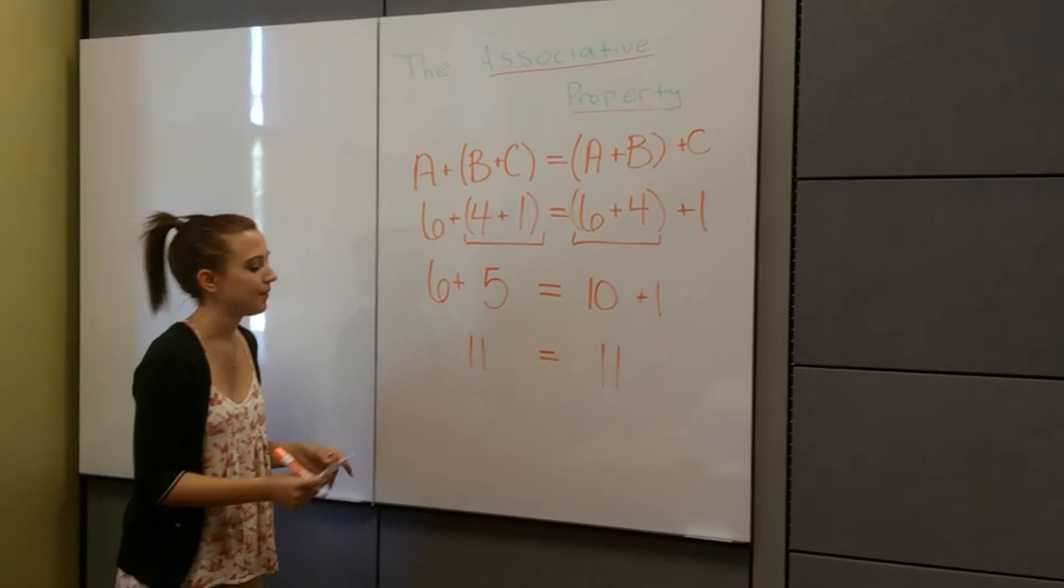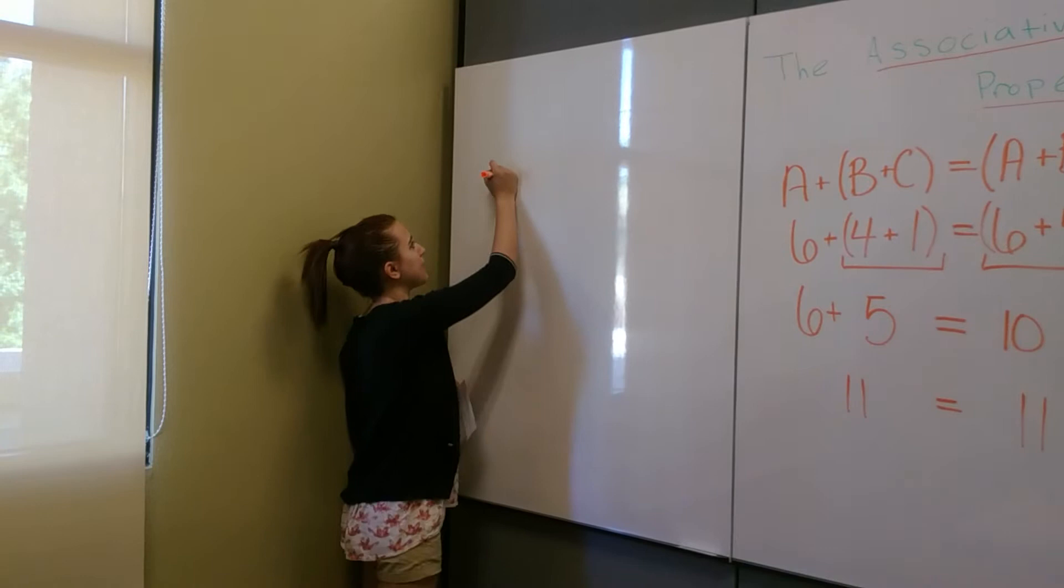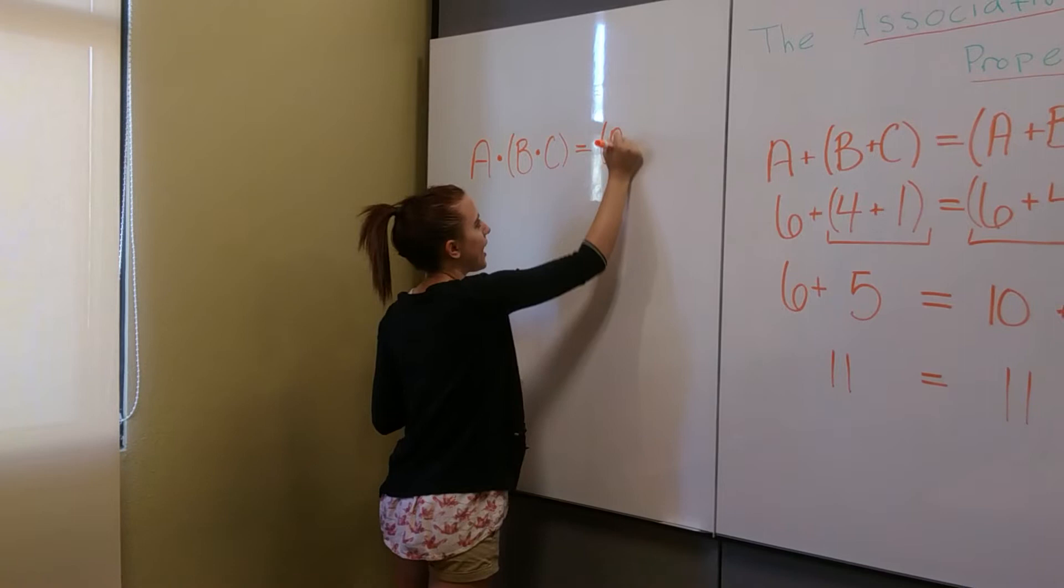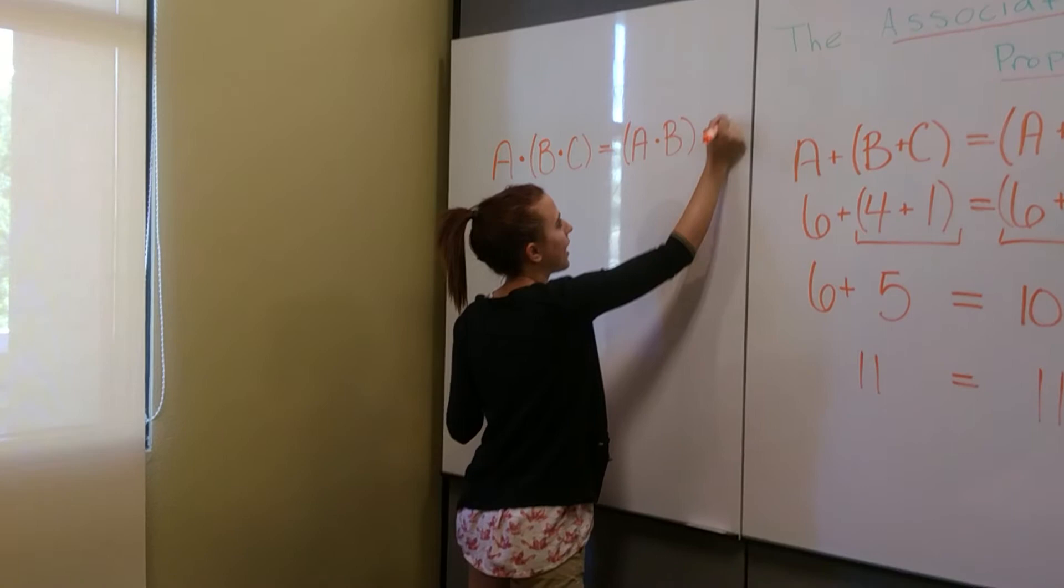So this also works for multiplication. So we could also write this as A times parentheses B times C is equal to parentheses A times B, close parentheses, times C.